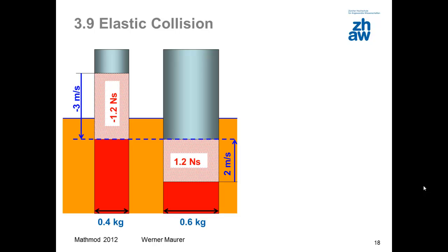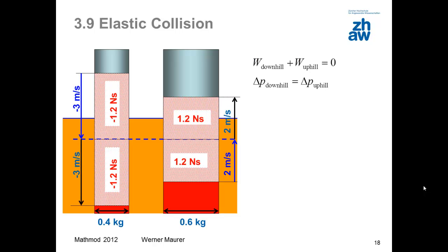An elastic collision is like an inelastic collision doubled. First, as in the case of an inelastic collision, momentum flows down and releases energy. Then, the same amount of momentum is pumped upward, and the energy released and the energy absorbed are equal. As a result, the momentum that flows down and the momentum that is pumped up are equal. In this way, the terminal velocity of the two bodies can be calculated.